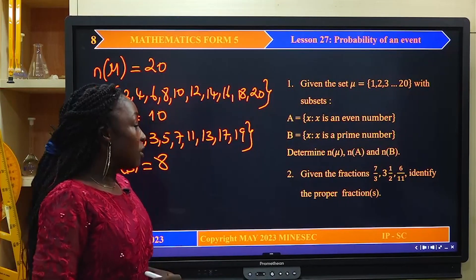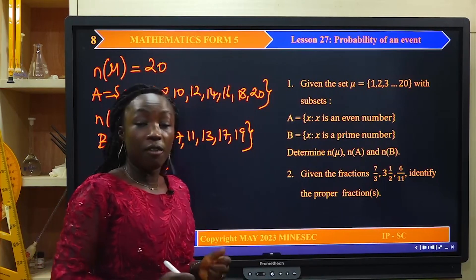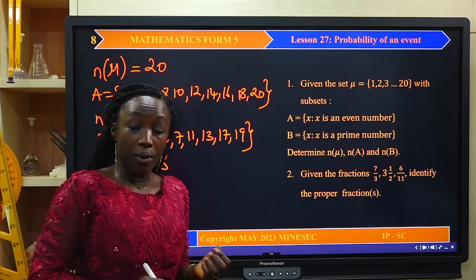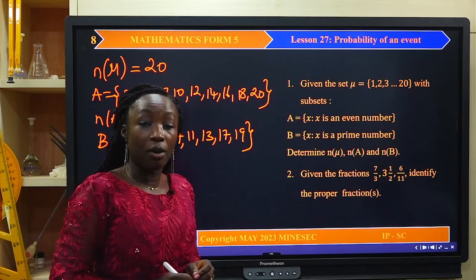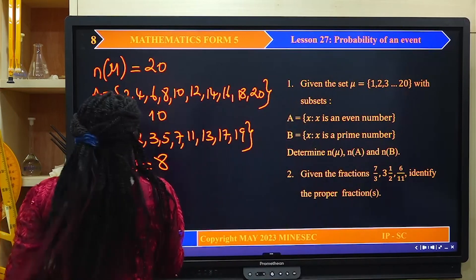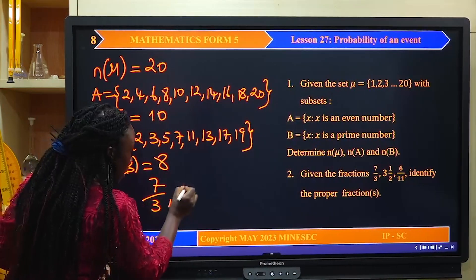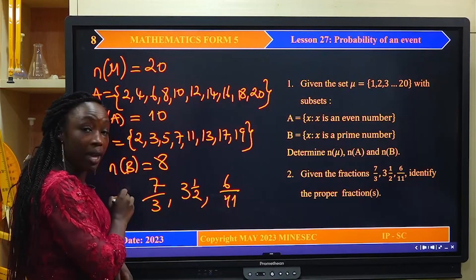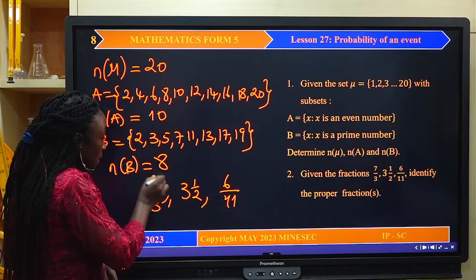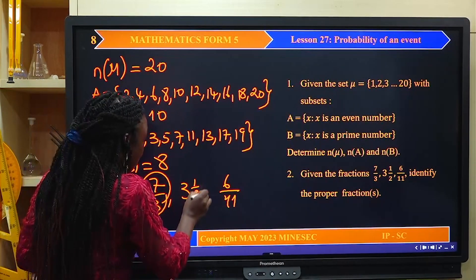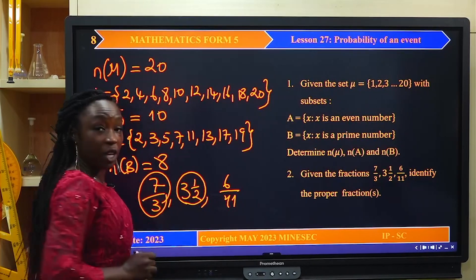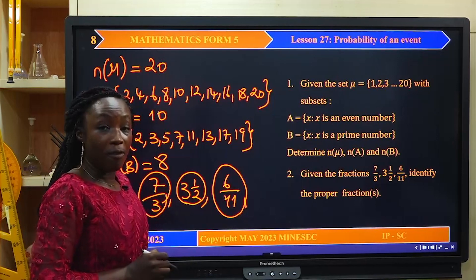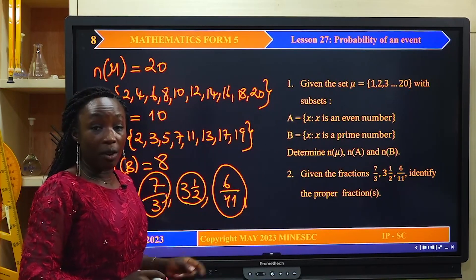For the second prerequisite question, given the fractions, identify the proper fraction. Proper fractions are those where the value of the numerator is less than the value of the denominator. Looking at 7/3: the numerator is greater than the denominator, so it is an improper fraction. 3 and a half is a mixed fraction. 6/11 is a proper fraction because the numerator is less than the denominator.